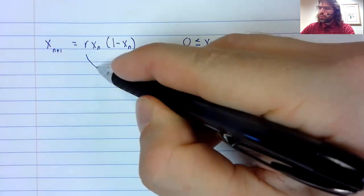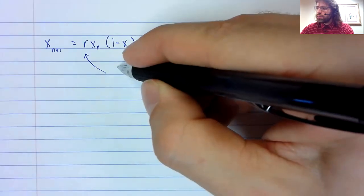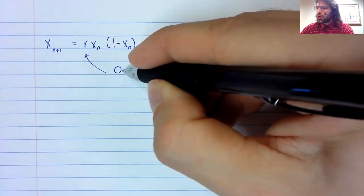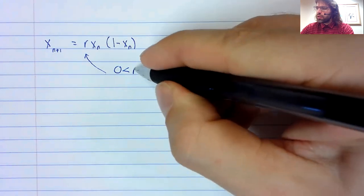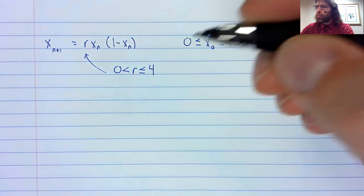And we're going to put the restriction on r, that r is between zero and four.